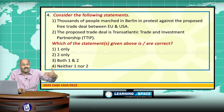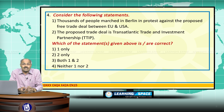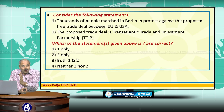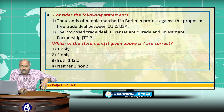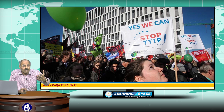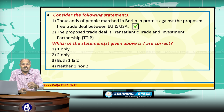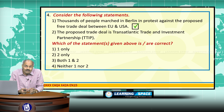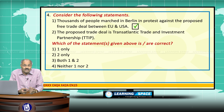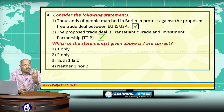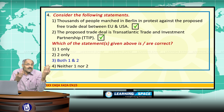Thousands of people marched in Berlin to protest against the proposed free trade deal between Europe and the United States of America. Europe and the USA are expected to sign this free trade agreement, and around 150,000 people marched in the streets of Berlin recently. The proposed trade deal is the Transatlantic Trade and Investment Partnership, TTIP. Some European countries are not in favor of TTIP. Both given sentences are correct, and the right option is 3.